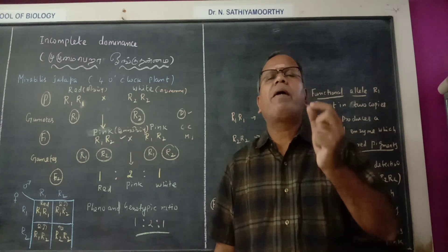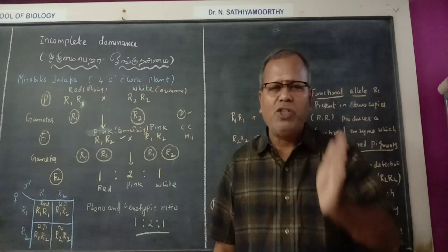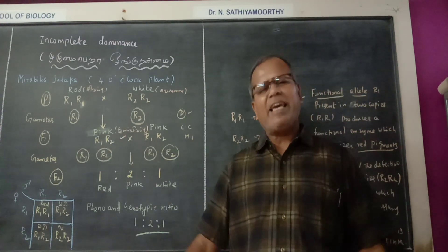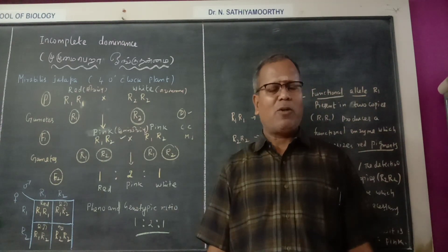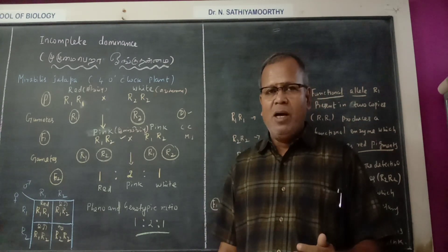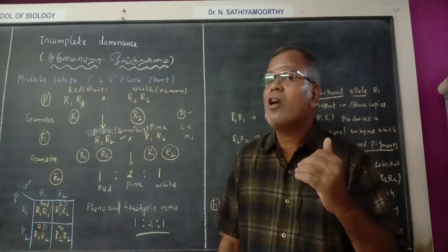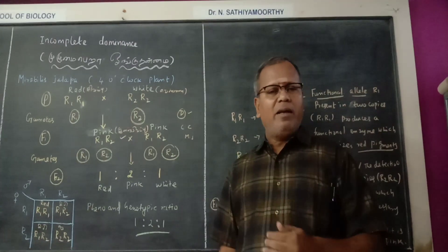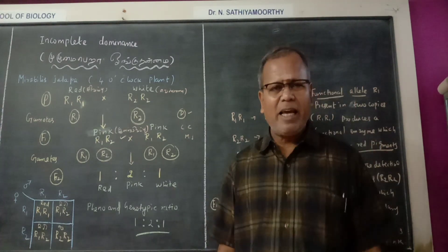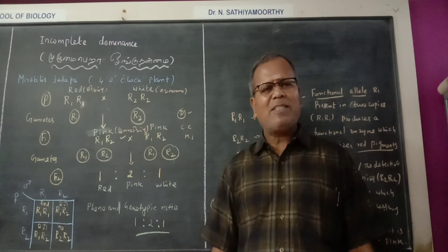The phenotypic and genotypic ratio are the same — 1 is to 2 is to 1. This is incomplete dominance. Thanks a lot, thank you.